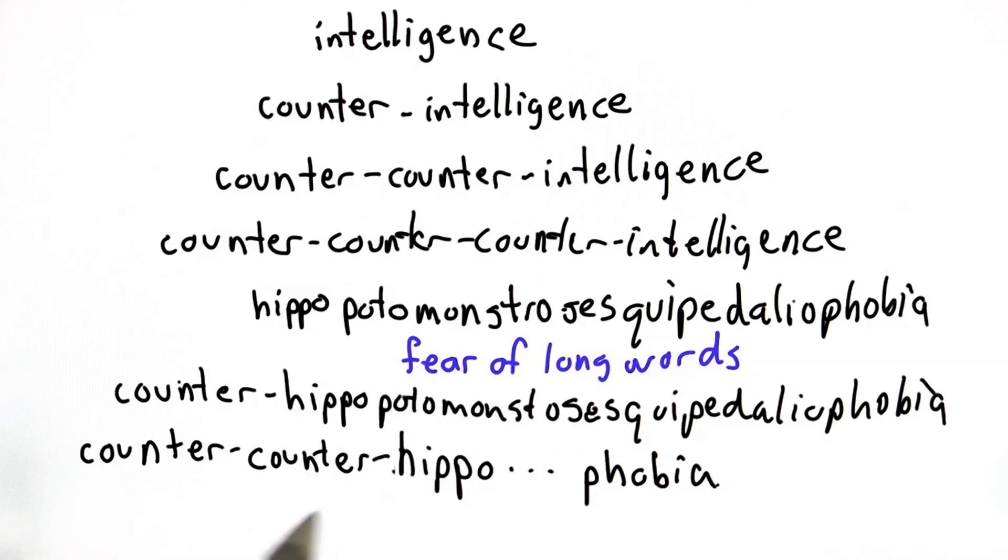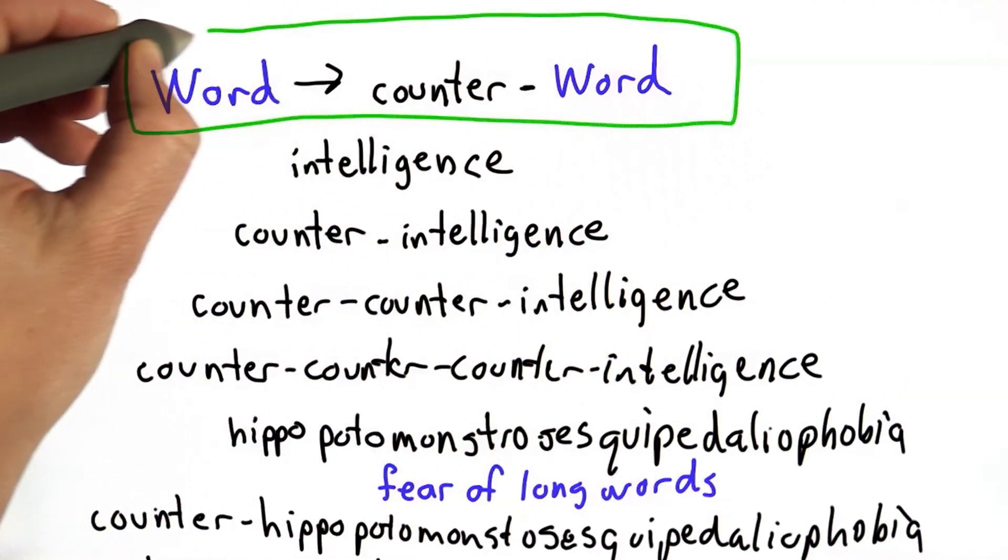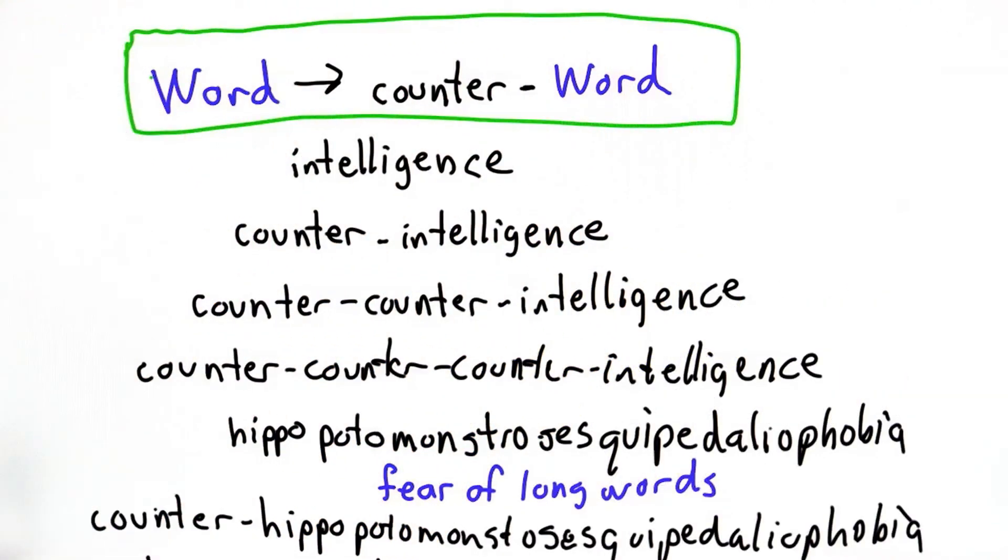Then coffee would be a counter-counter-hippo so forth phobia. So the point is, because English has this rule that allows us to make new words from old words, there's no such thing as the longest word. We can always make a longer word starting from any word that we have. If you remember how BNF grammars work, then you should be able to answer the next quiz.